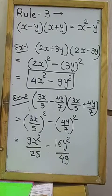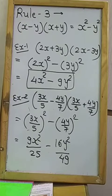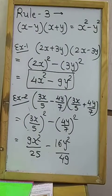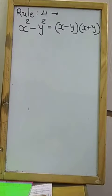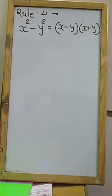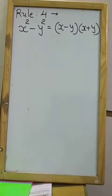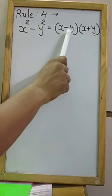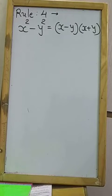This is rule number 3. Now we will learn rule number 4. Rule number 4 states: x² − y² = (x − y)(x + y). That is rule number 4.